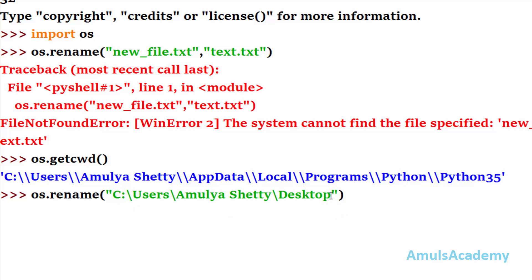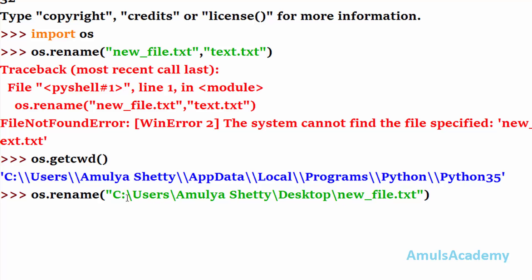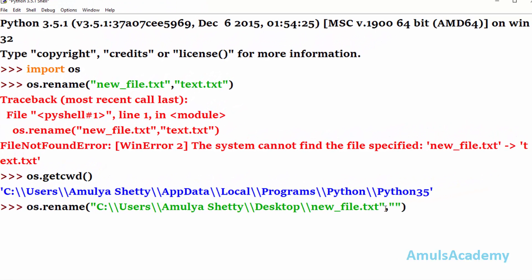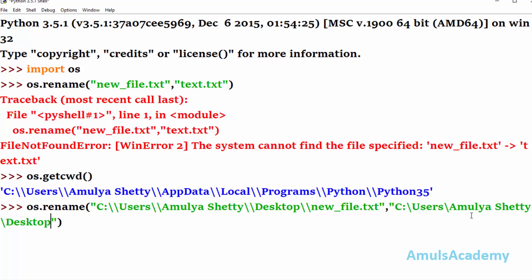Here I first mention the path, then the file name new_file.txt. However, we can see backward slashes in the path, and Python may treat characters like \u, \a, \d, and \n as special escape sequences. To avoid this, we need to use a raw string or escape the backslashes. Then I provide a comma, the new path, and the new file name text.txt, also with the escaped path.